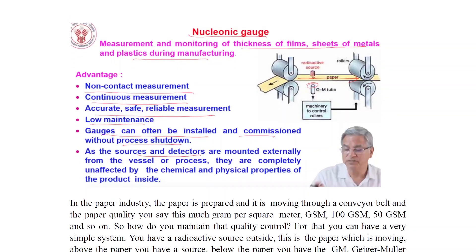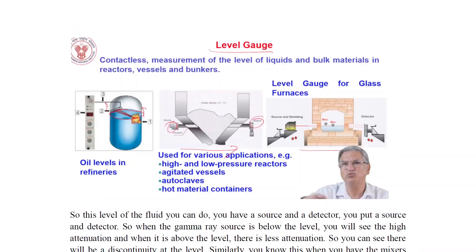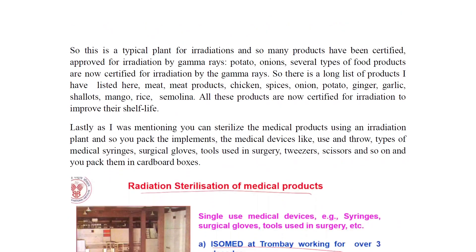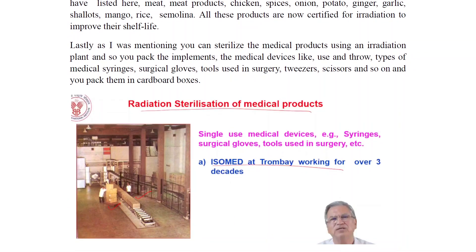Nucleonic gauges provide non-contact, continuous, accurate, safe, and reliable measurements with low maintenance. Gauges can often be installed and commissioned without process shutdown — examples include level gauges. Radiation sterilization of medical instruments is another application, with isomated systems working for over three decades.